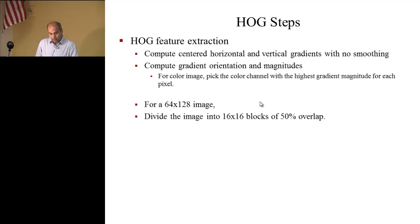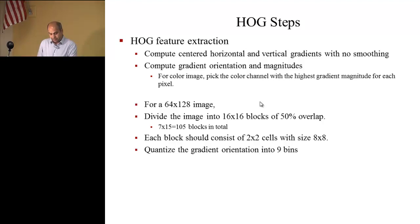What we are going to do, we'll divide the 64 by 128 image into 16 by 16 blocks with 50% overlap. Then each block will consist of 2 by 2 cells, and the size will be 8 by 8. Then we are going to quantize the gradient orientation. Here they do in 9 directions, and the SIFT as we just talked about, they did it for 8.